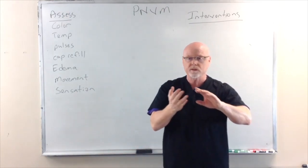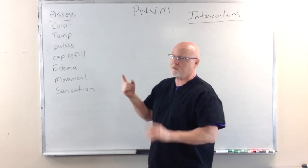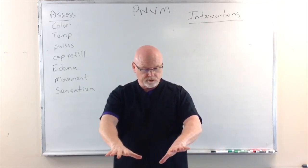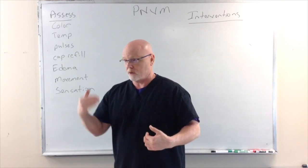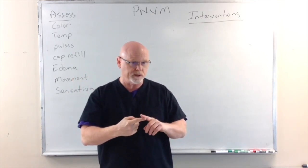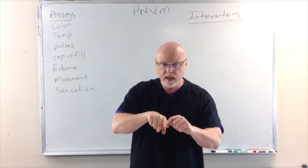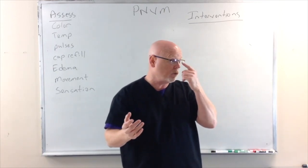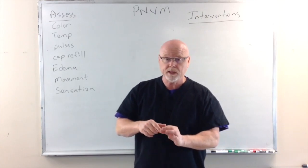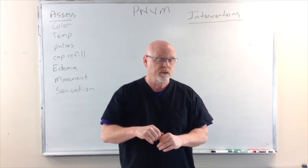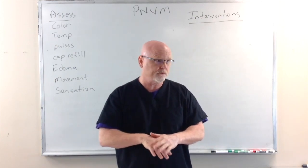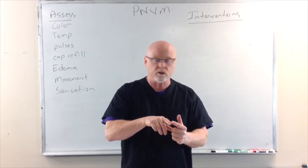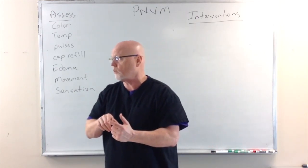Next is color. In peripheral neurovascular management, the only two words you need to use for color are pale or pink, because you're literally looking at the nail beds. It doesn't matter what the patient's ethnicity is — if they're oxygenating well and the H&H is good, they're going to have nice pink nail beds. If they have fingernail polish, go straight to the fingertips and look at the color of the tips of the fingers, which are also very rich in capillaries.